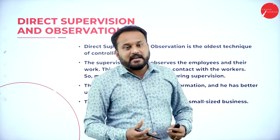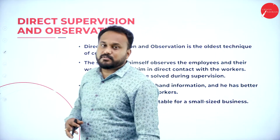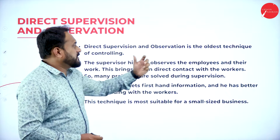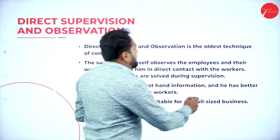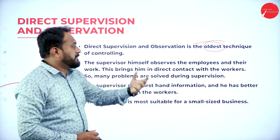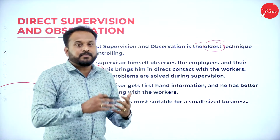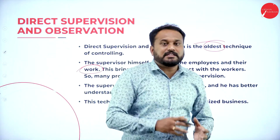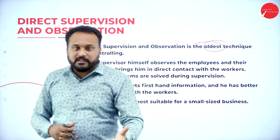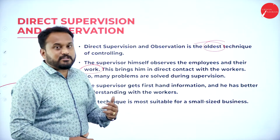The first technique is direct supervision and observation. DSO is the oldest technique of controlling. The supervisor himself observes the employees and their work, bringing him into direct contact with the workers. The supervisor will check each and every person — how well they are equipped with their work, whether they are being productive or not. Many problems are solved during supervision itself.